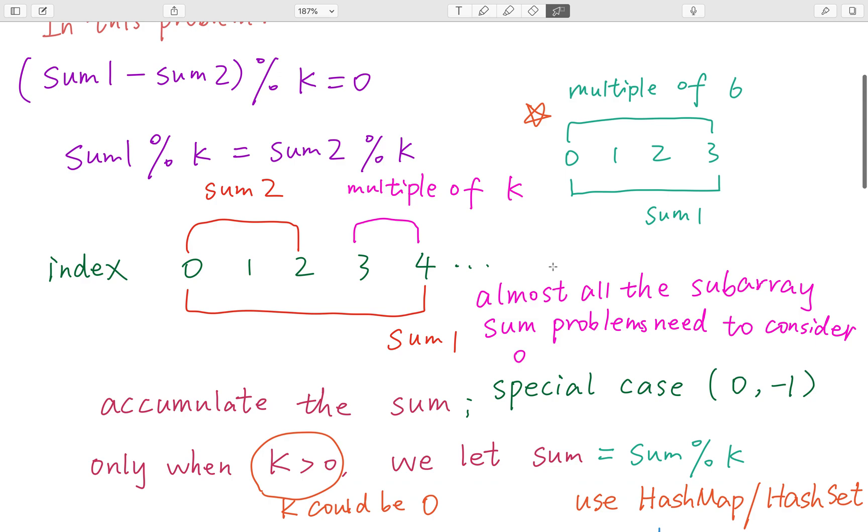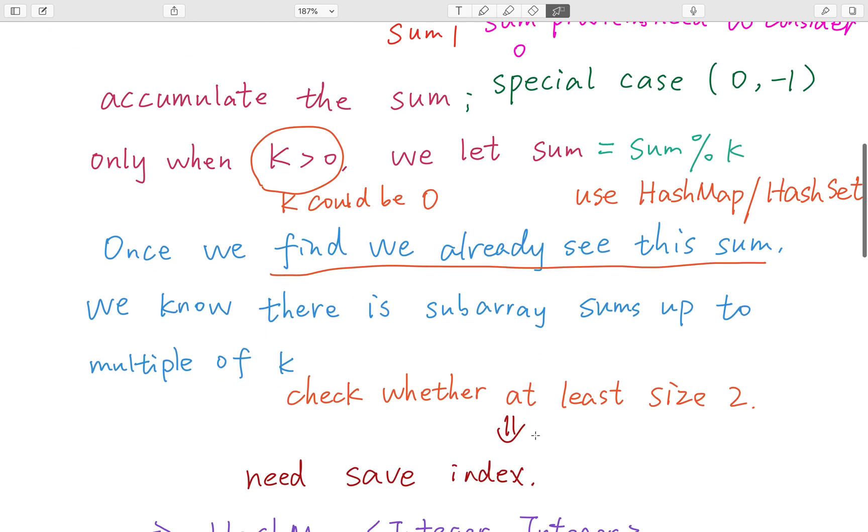To check whether we've seen sum modulo k before, we can use a hash set or hash map. But we also need to check whether the size is greater than or equal to two, so we need the index. We can use the current index minus the previous index.